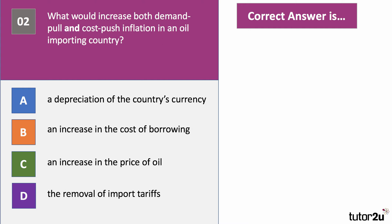What is going to cause both demand-pull and cost-push inflation to go up, given that this is an oil-importing country? The right answer is a depreciation of the country's currency. Depreciation makes exports more competitive in price terms, leading to an increase in exports and aggregate demand. It also increases the price of oil. If oil is priced in dollars and the country's currency depreciates against the dollar, the increase in oil prices causes an inward shift of short-run aggregate supply, thereby causing cost-push inflation.